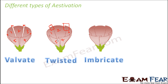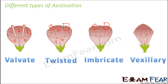In imbricate aestivation, margins overlap but not in a particular direction — the overlapping is random. In twisted, petal two was above one, three above two, four above three — a specific pattern. In imbricate, they overlap with each other in a random fashion with no specific direction.